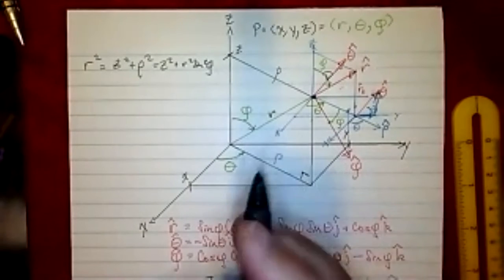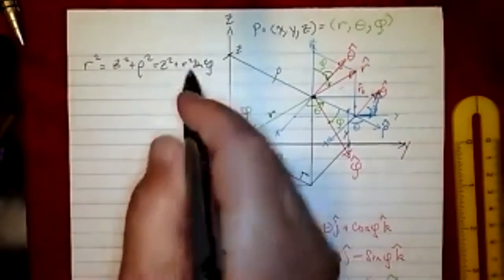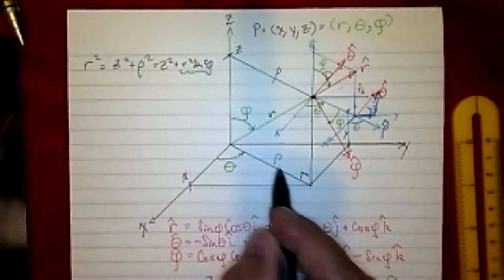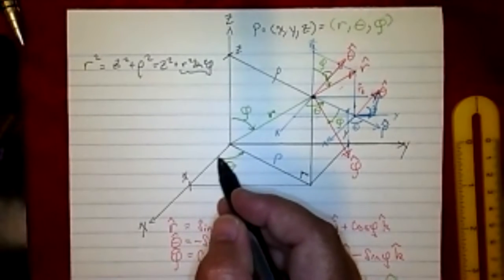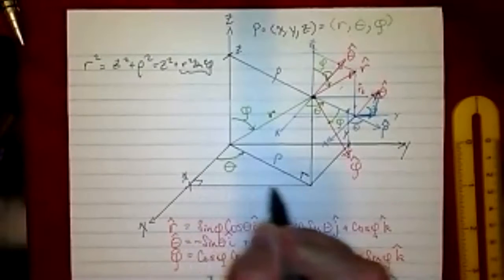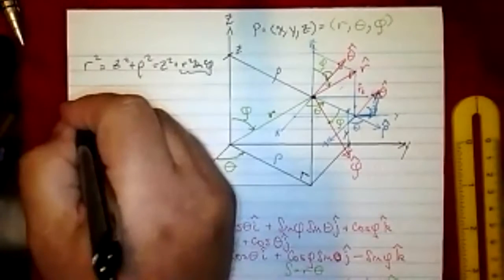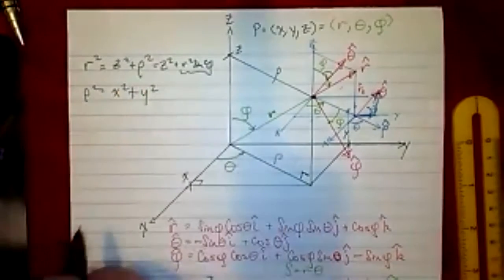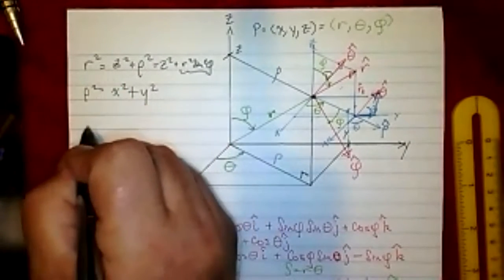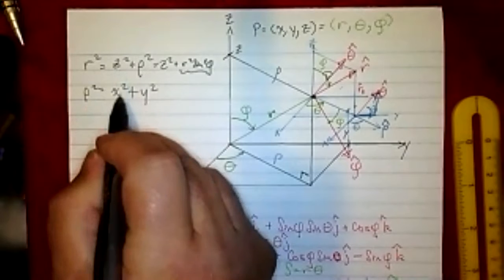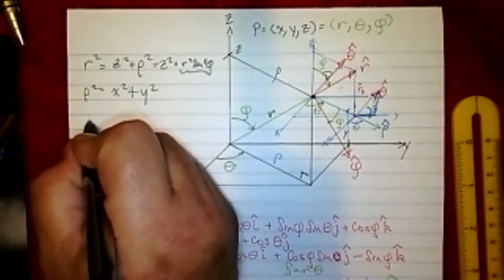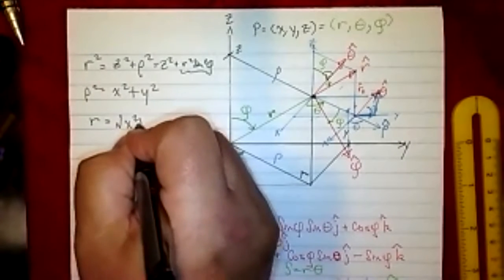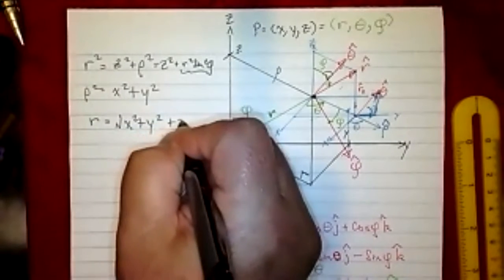Well, if I know what rho is, I wouldn't have to substitute that thing. If I look at rho — that's just the hypotenuse of a triangle with one leg x and another leg y. So rho squared is equal to x squared plus y squared. Now I can substitute that in and get r squared equals z squared plus x squared plus y squared. So r equals the square root of x squared plus y squared plus z squared.